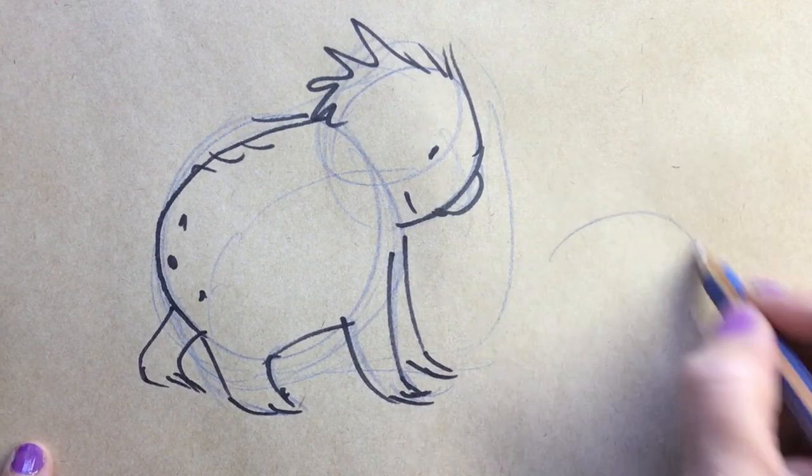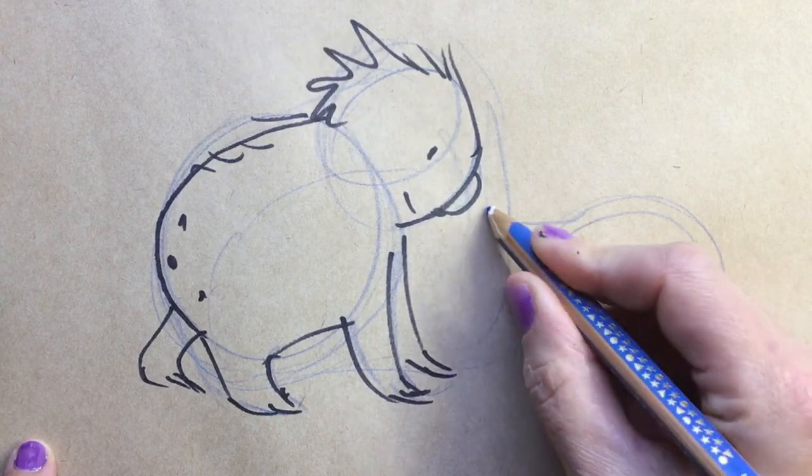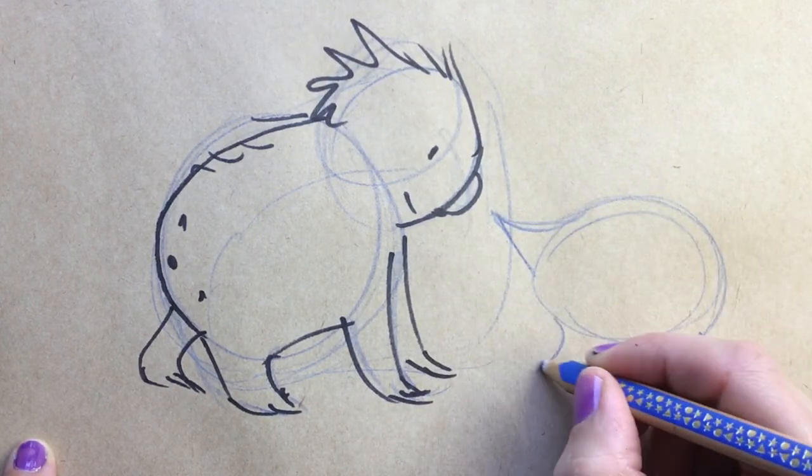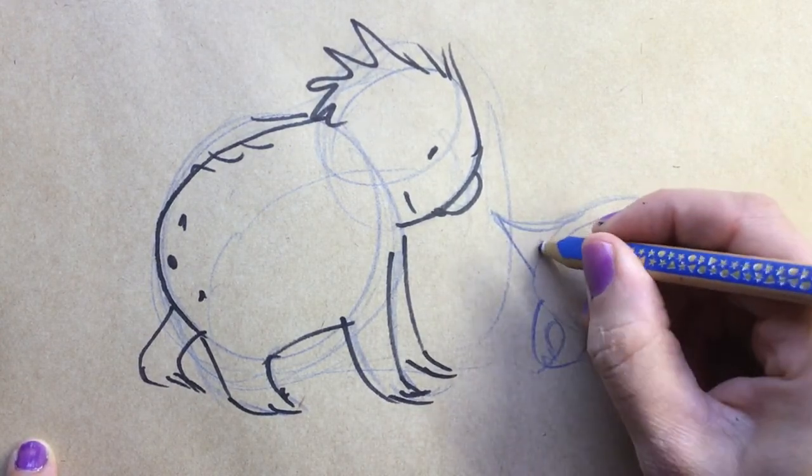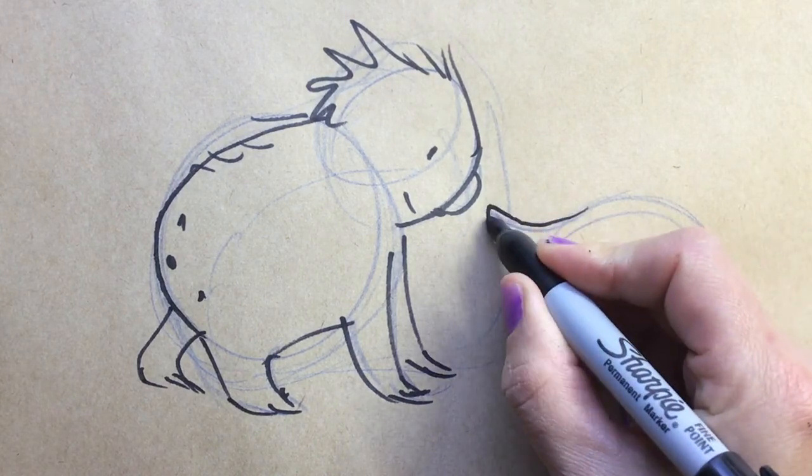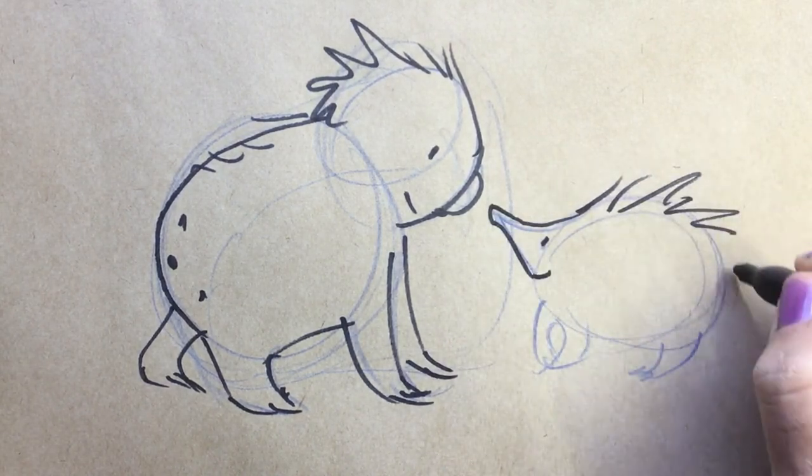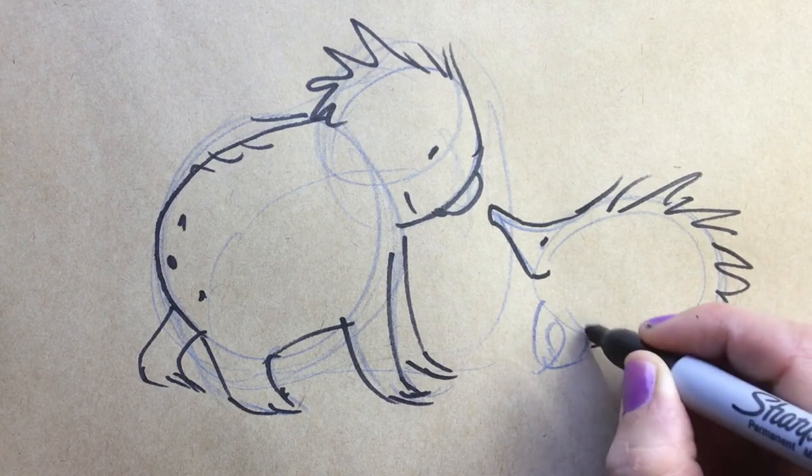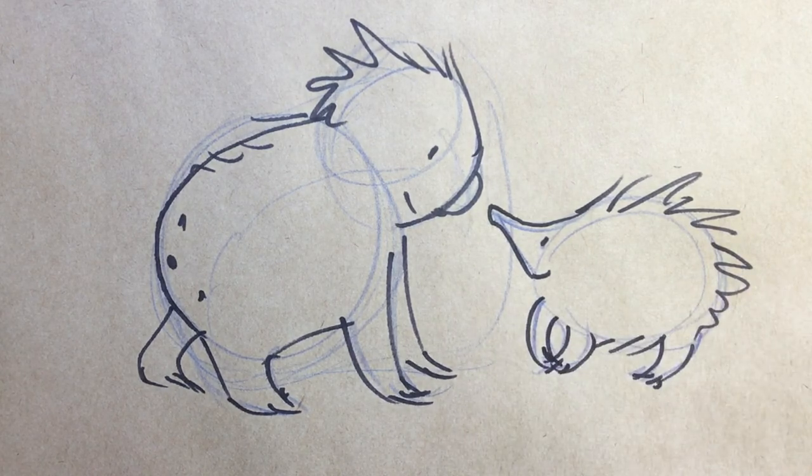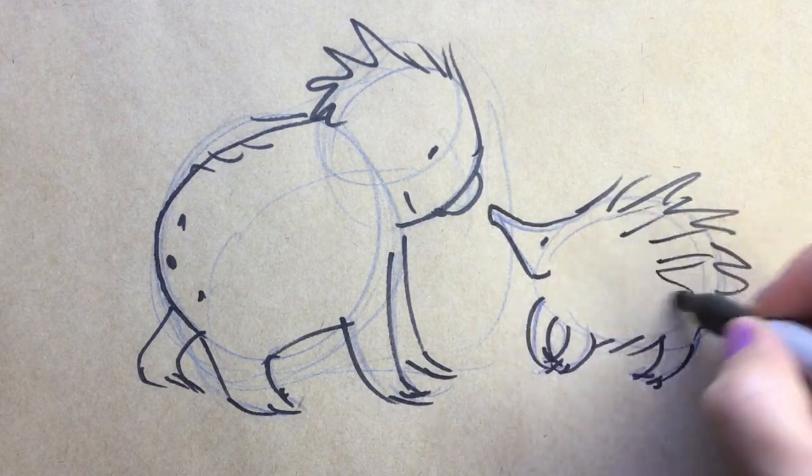The last animal also has the curvy legs but it's got sort of a triangle nose and it kind of curves a little bit at the very tip, and then it's very spiky. So there's an echidna. That's how to draw some curious Aussie creatures.